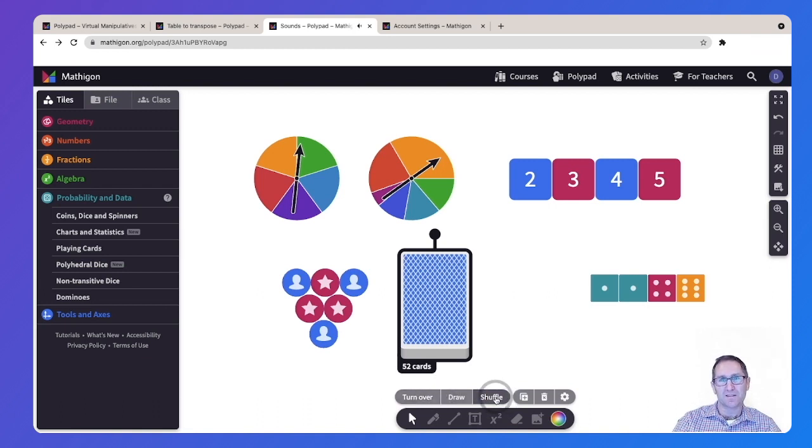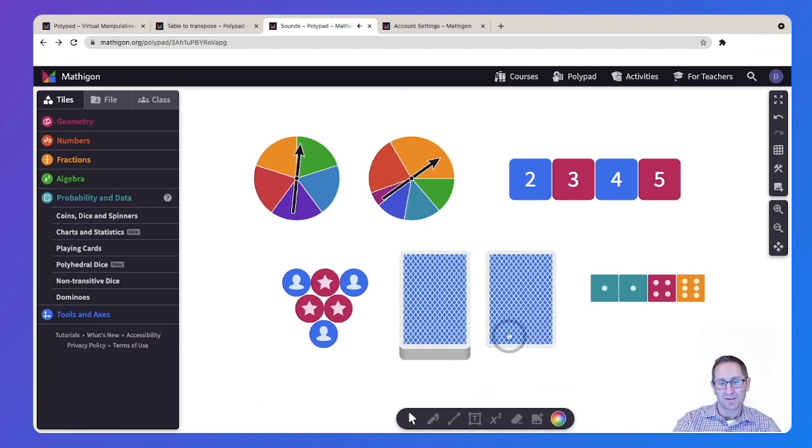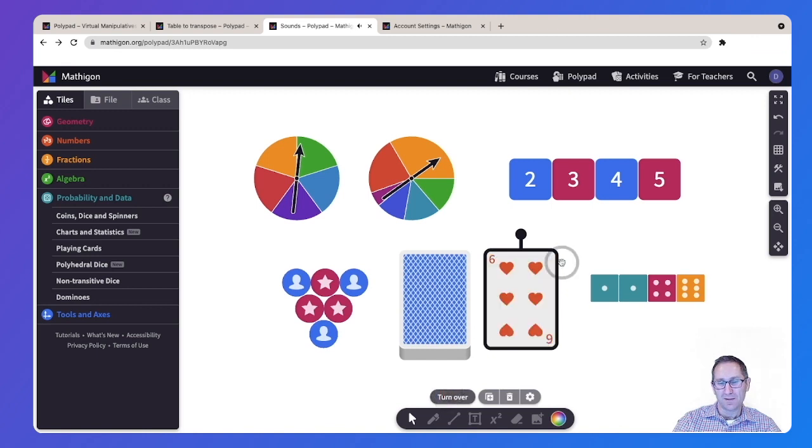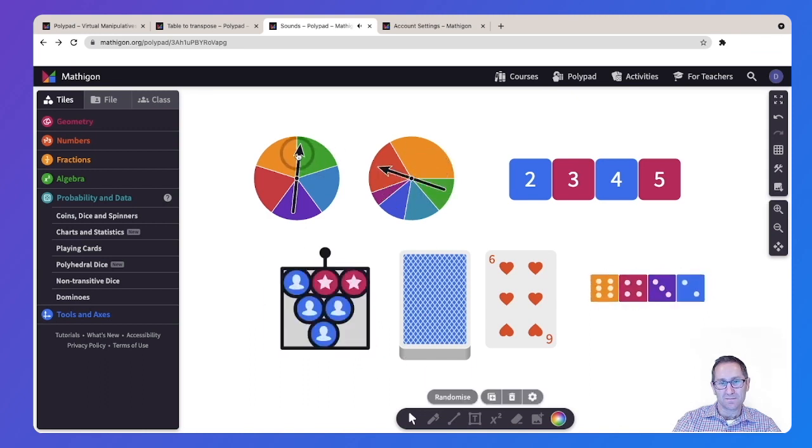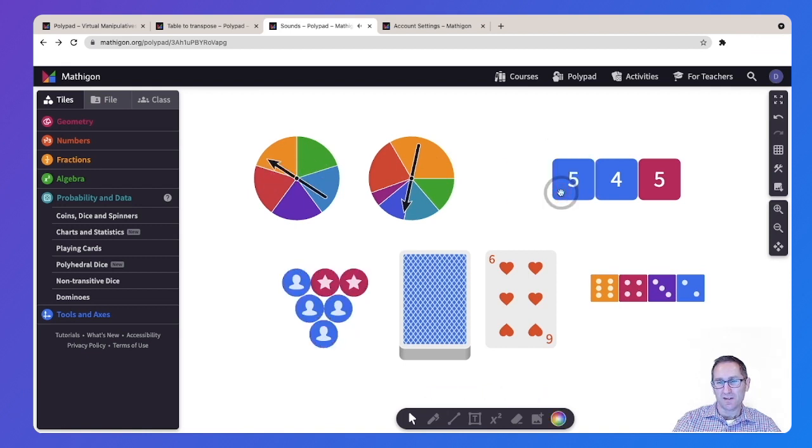So the sound effect gives you confirmation that the deck is indeed being shuffled. There are some other sound effects for draw and turnover. And many of the probability tools have sound effects as well. As well as when you merge the number tiles. Wonderful.